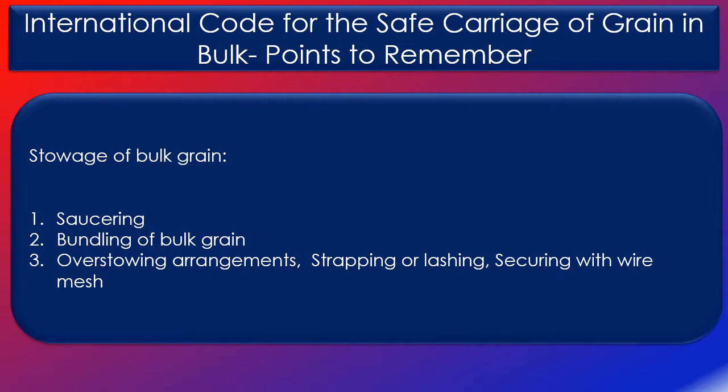Having a general understanding of the grain code and its content should be satisfactory should a question related to this code be asked. As always, physical browsing through this code should help you in understanding it better. If you work on bulk carriers, I would strongly recommend that you scan the code for details on grain stability and securing bulk grain through various methods, including the advantages and disadvantages of each securing method. On that note, I am closing my lesson on the grain code and I shall see you soon for one of my other cargo lessons. Bye.